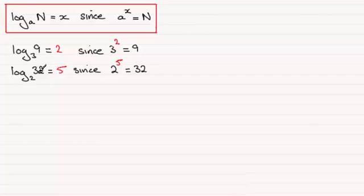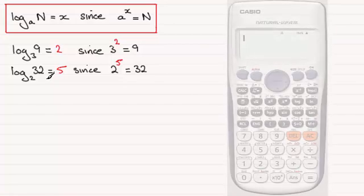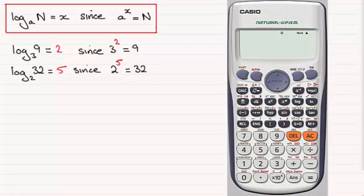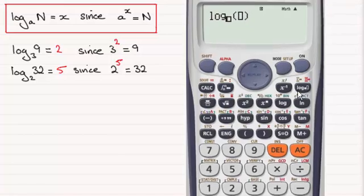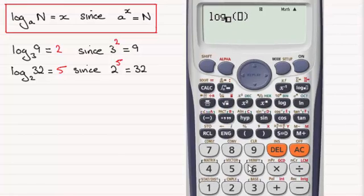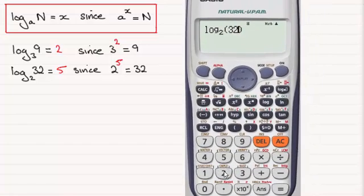If you're unsure of what the log of a number is in a particular base, you can always use a calculator. I'll show you: up here is the log button. If I wanted to work out the log of 32 in base 2, pressing this button, you can see we've got the base field. If I enter the base 2, move the cursor into the bracket and enter 32, pressing equals we get 5. That's the way we can work it out on the calculator.